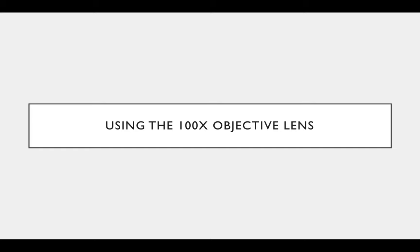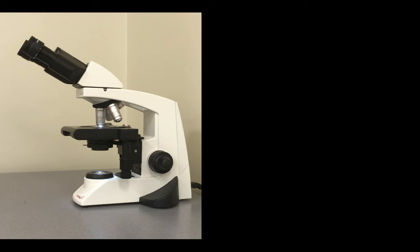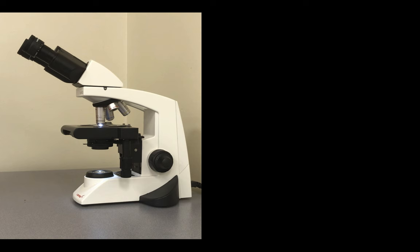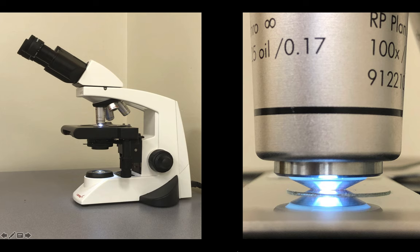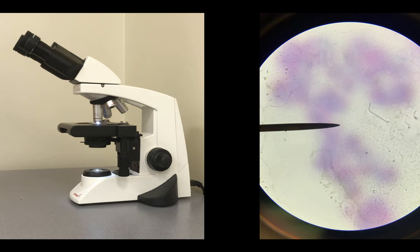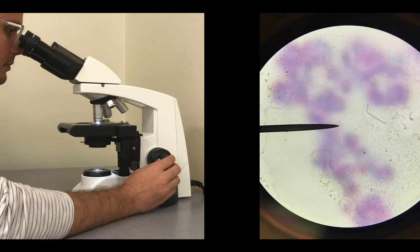Last but not least, the big guns — using the 100x objective lens. That's going to magnify an object 100 times, times the 10 times from the ocular lens — a total of 1,000 times magnification. Switch to the 100x lens using that nose piece. Here's the distance between the 100x objective lens and the slide — it looks like there's no space there, but don't worry, it's not going to run into it. Just make sure from now on you use only the fine knob to get your object into focus.